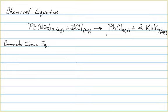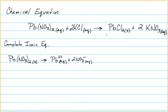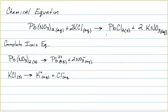As we've discussed with solutions, lead-2-nitrate as a solid, when put into solution, becomes aqueous and dissociates into two different ions: the lead-2-ion and two nitrate ions. The same thing is true for potassium chloride — if we put solid potassium chloride into water, it's going to dissociate into the ions potassium and chloride. Since we are using aqueous lead-2-nitrate and aqueous potassium chloride as reactants, how they exist in this reaction is represented by how they dissolve in water.